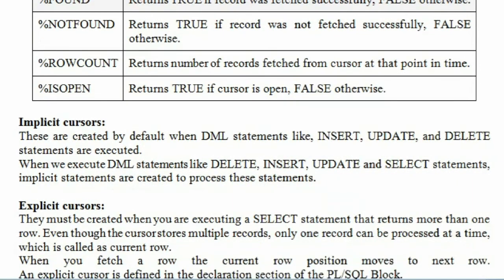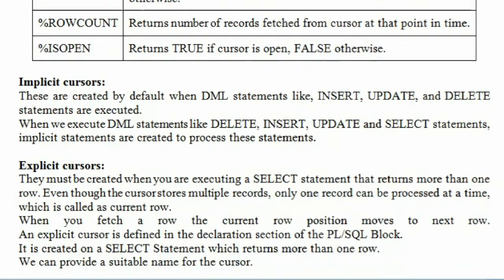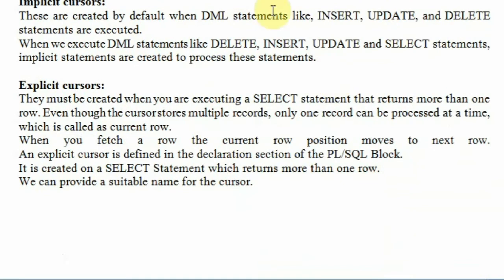Implicit cursors are created by default — without you knowing, your environment will give you implicit cursors. They are created by default when DML statements like insert, update, and delete are executed. When we execute DML statements, implicit cursors are created to process these statements. They are automatically created by the execution engine — those are called implicit cursors.